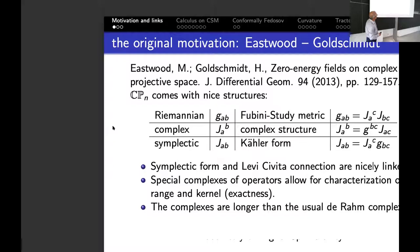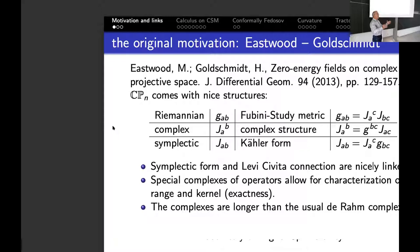The symplectic form and the Levi-Civita connection are very nicely linked, and there are these already-mentioned special complexes of operators where you can characterize the image as a curl of another. What you notice at first glance is that the complexes are by one slot longer than their de Rham analog — which sounds surprising and rings bells. On top of all that, there are very few Kähler manifolds with the Ricci type which is the case here. This can also be read from a very recent memoir of the AMS, the preprint of which was already up in complete form in 2015.